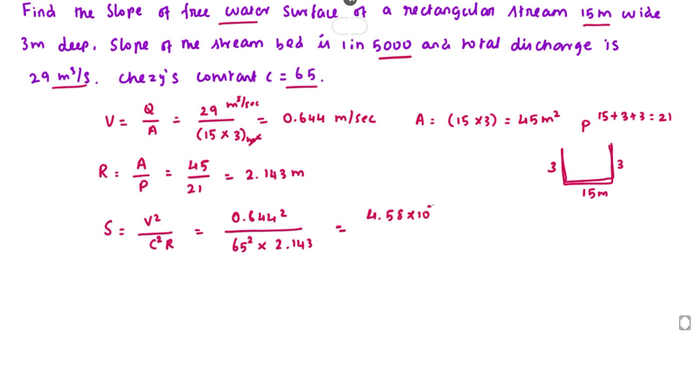Solving this we get 4.58 × 10⁻⁵, or the slope 1 in 21,831.